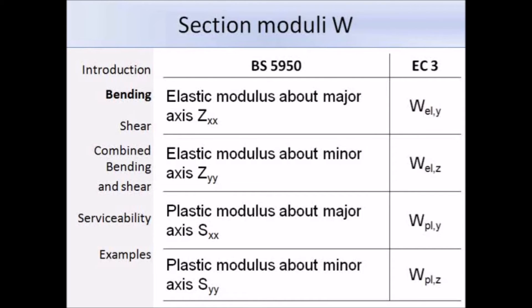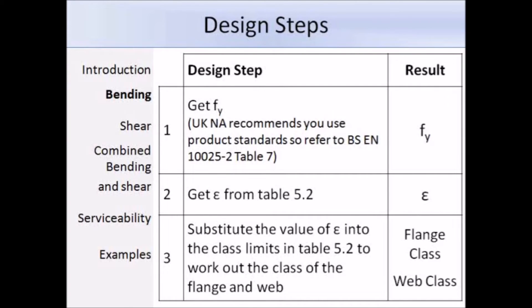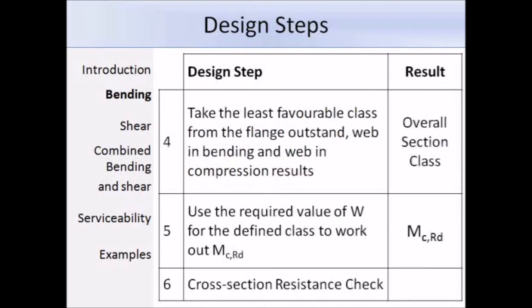Now that we have covered bending moment resistance, here is just a summary of the design steps that you'll have to complete. Steps 1 to 3 are to do with classifying the section, so I won't talk about them because as I said before, they're covered in detail in the cross-section classification presentation. Step 4 then is to do with classifying the section. After completing that step we will know the section class, so we'll be able to use the required modulus to work out the design bending moment resistance in step 5. The final step is the cross-section resistance check given by equation 6.12, which I showed you at the start of this section. To recap, it states that the design moment should be less than the design bending moment resistance. If the check in step 6 is not satisfied, then you're going to need to choose a different section and repeat all of the steps again.